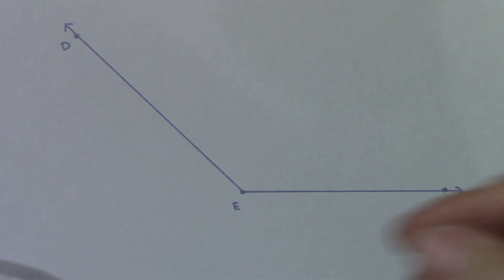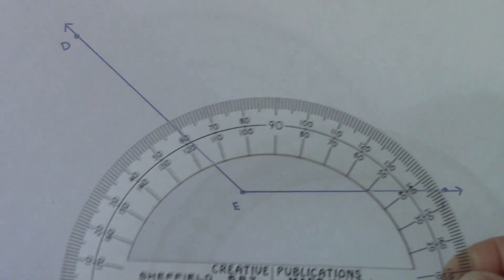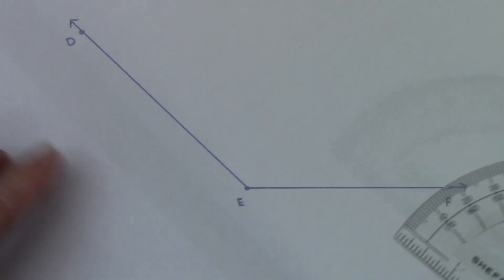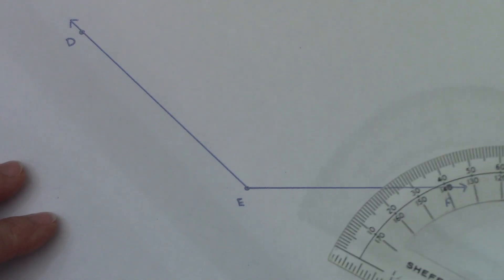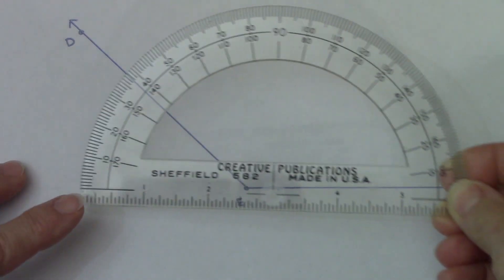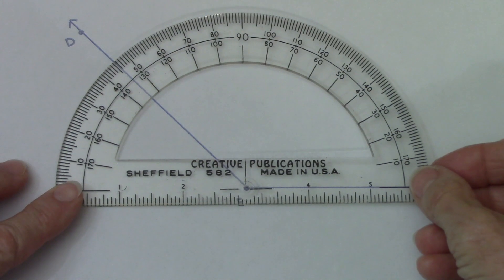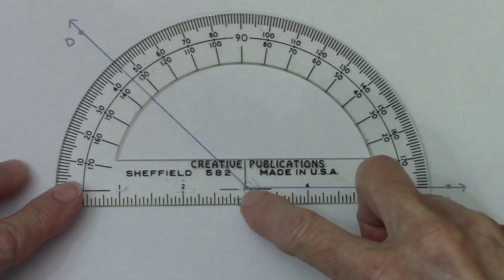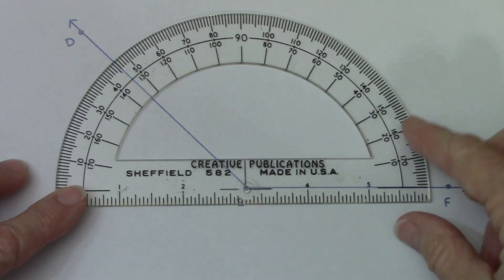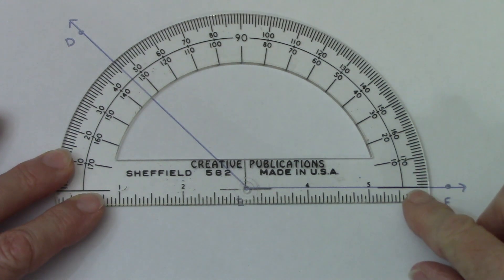Here's another angle I'm going to measure. This is angle DEF. The vertex is always the middle letter when we say the angle. So I'm going to put the circle right on E. I'm going to line this up along the line and follow.